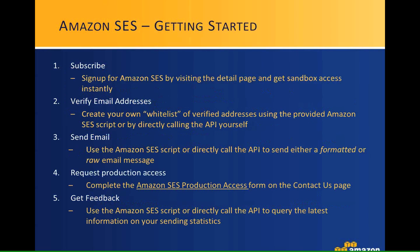How do you get started using Amazon SES? We think it breaks down into five quick steps. First, you must subscribe — go to the Amazon SES detail page, click the Sign Me Up button, and you'll have sandbox access. Remember, the sandbox is the testing staging area where you're restricted to 200 messages per day and can only send to and from verified email addresses.